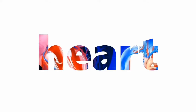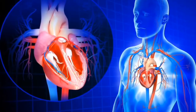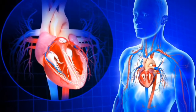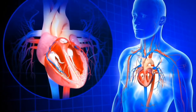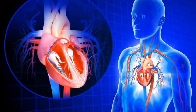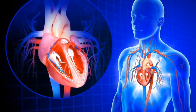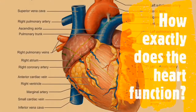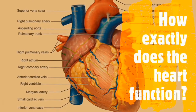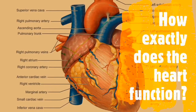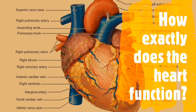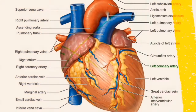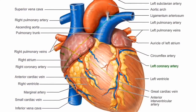The heart is the major organ for circulation. It pumps the oxygenated blood towards the lungs to get oxygen. Deoxygenated blood means low in oxygen, high in carbon dioxide.